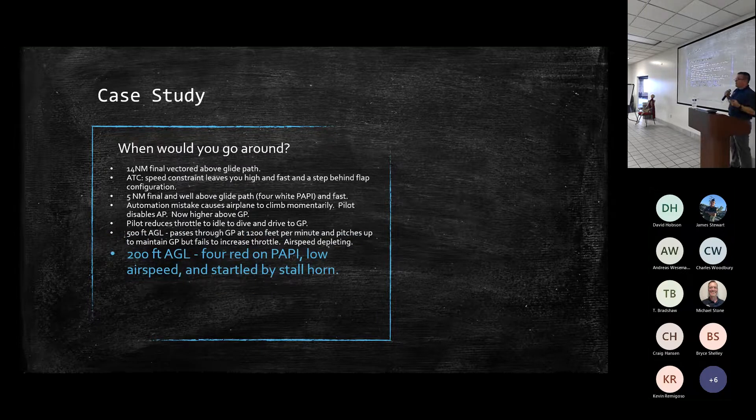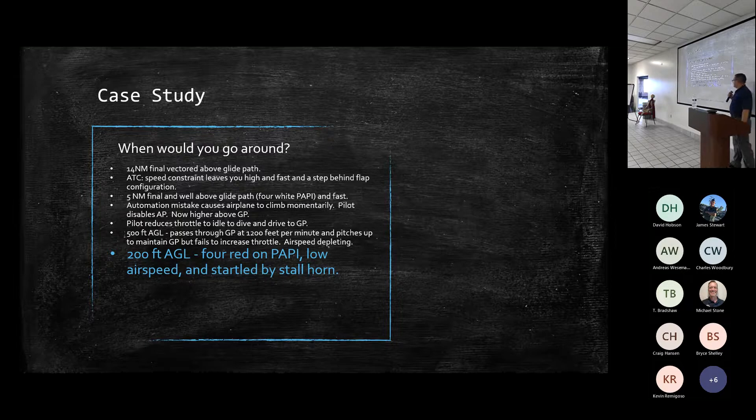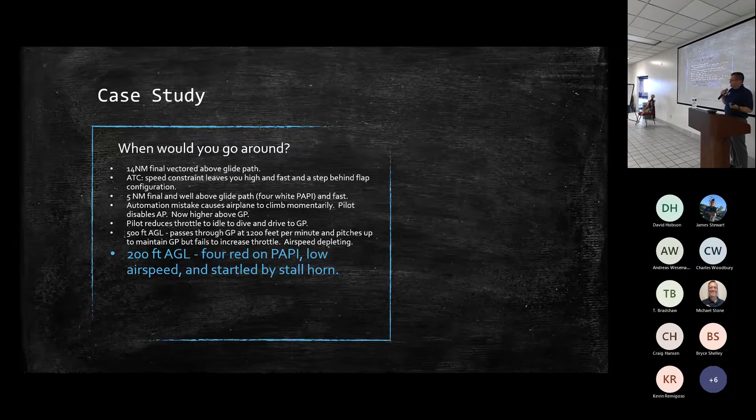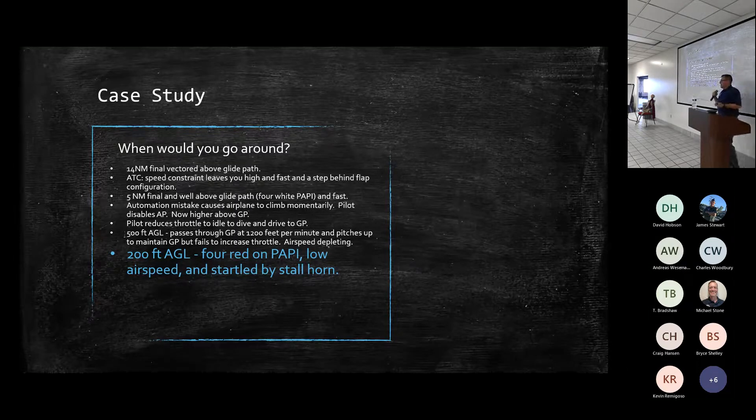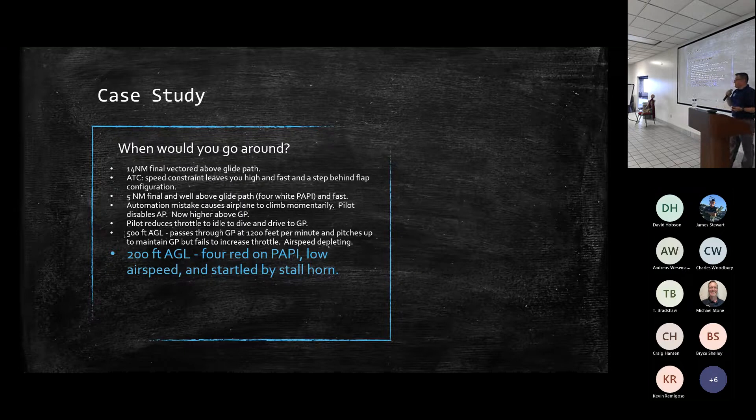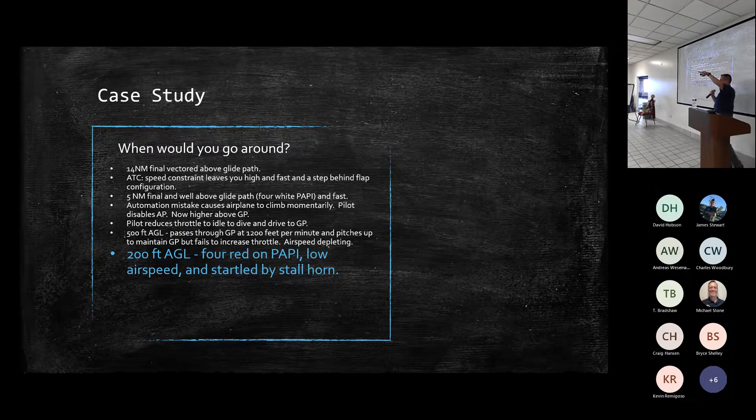Airspeed's still high, but bleeding off quickly. 200 feet. Well, you blew through the glide path. You're trying to get that in there. Your airspeed's depleting. And now you see four red on your PAPIs on the side. Your airspeed's low because you never caught that it was still depleting and you're still at idle. And you hear a stall horn. So make a decision. Is anyone uncomfortable yet? Are you okay? I've only got one hand that's uncomfortable. Everyone else is a lot more proficient than I ever, or a cavalier. I don't know.